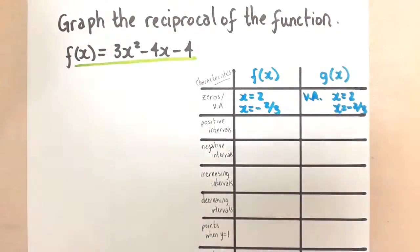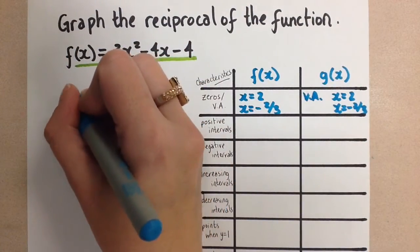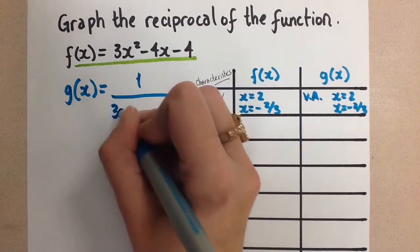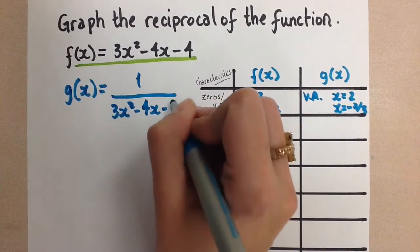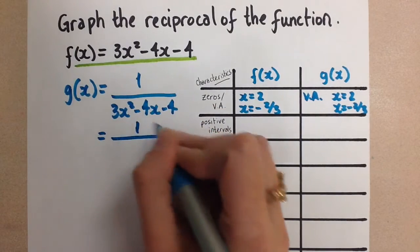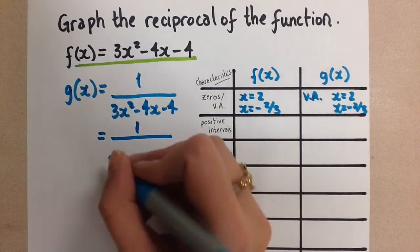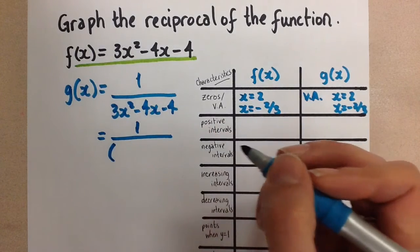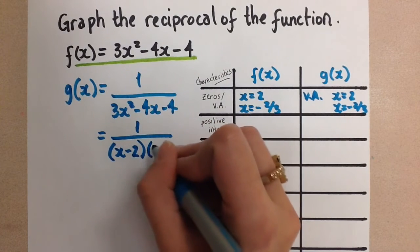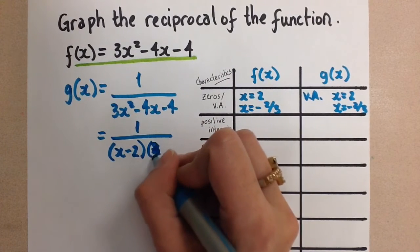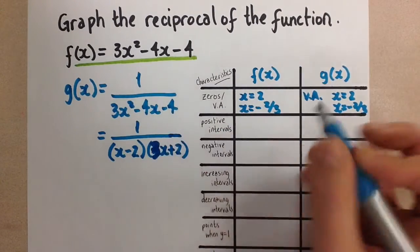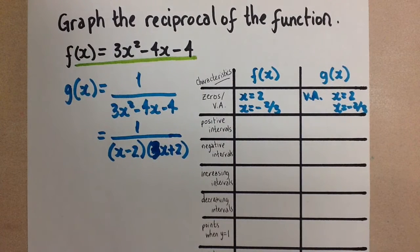Now I'll write the reciprocal that we're looking at. The reciprocal of that original quadratic would be 1 over that expression. You should factor that quadratic — I had already done it, but if we factor it, we use decomposition on the denominator. When we factor it, we get x minus 2 and 3x plus 2 as the two factors. That's where we got those zeros, and then the vertical asymptotes for our new function.